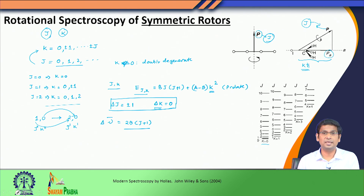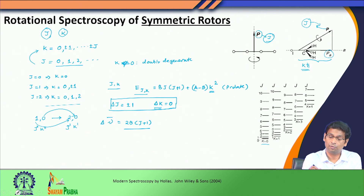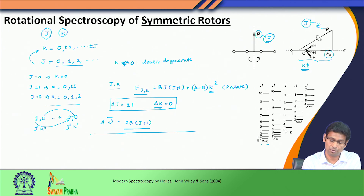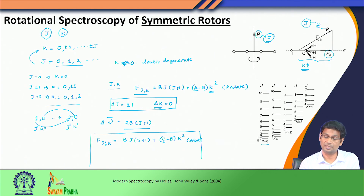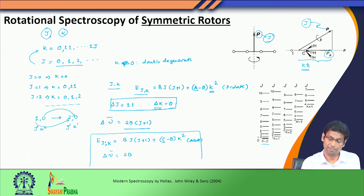For oblate symmetric rotors, a similar analysis applies. The energy expression is E(J,K) = BJ(J+1) + (C − B)K², where C replaces A compared to the prolate case. With the same selection rules ΔJ = ±1 and Δk = 0, this again results in the same transition wavenumber formula.